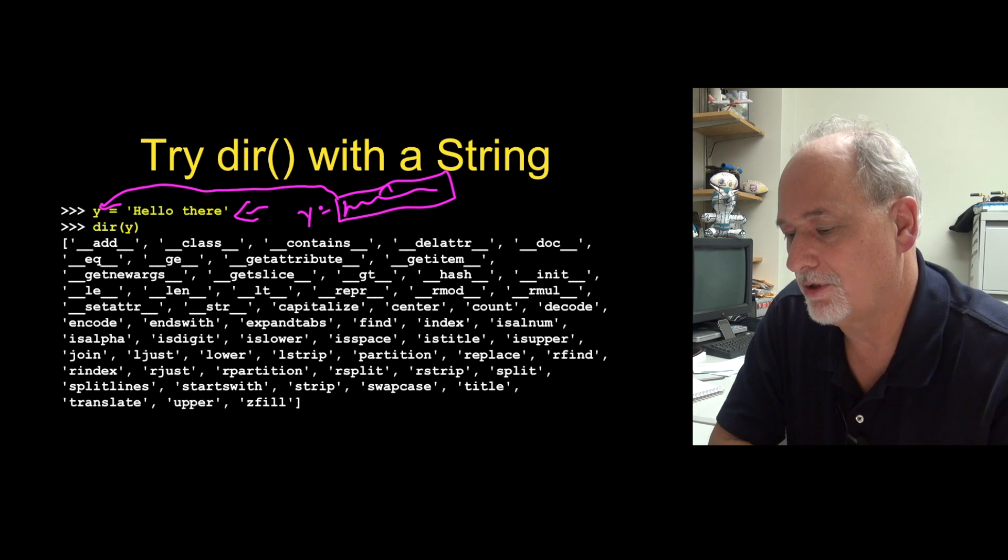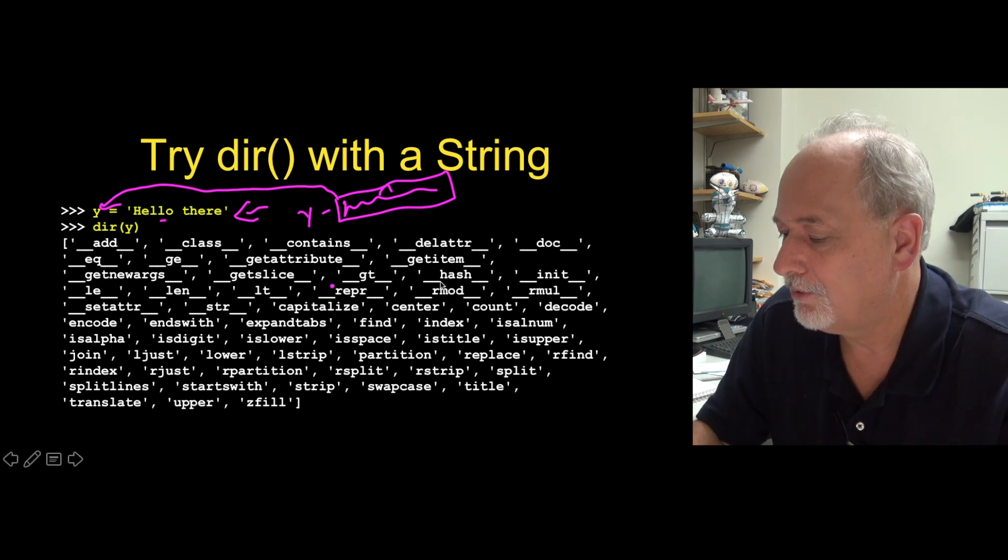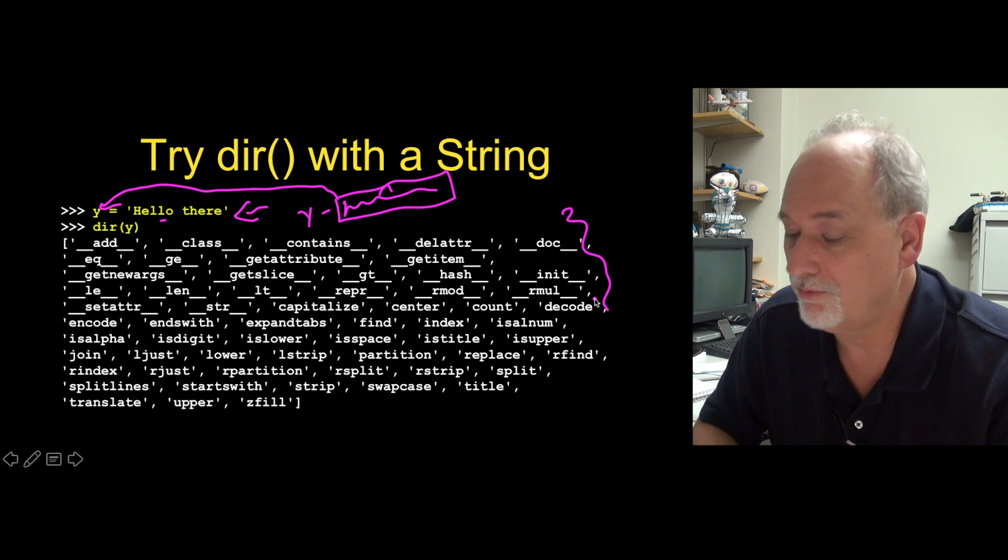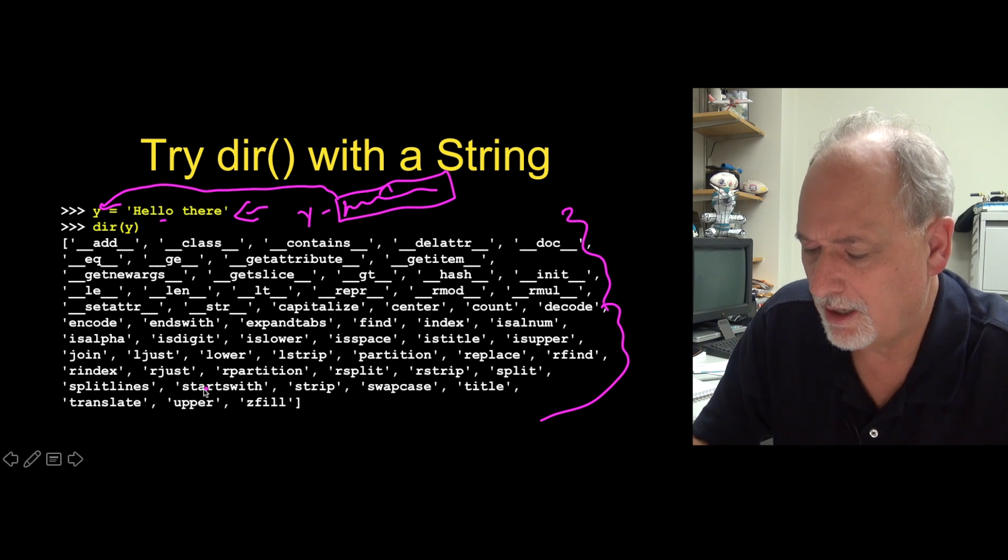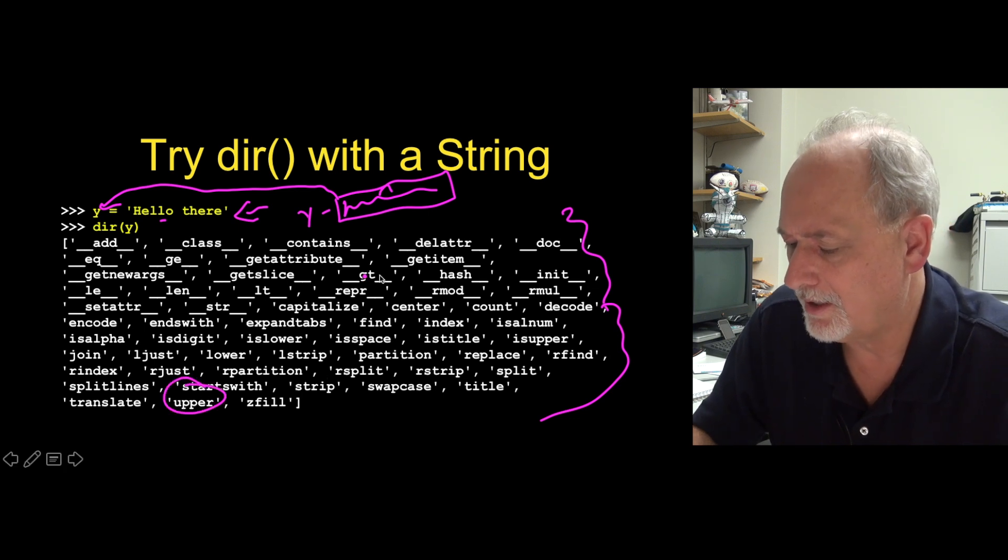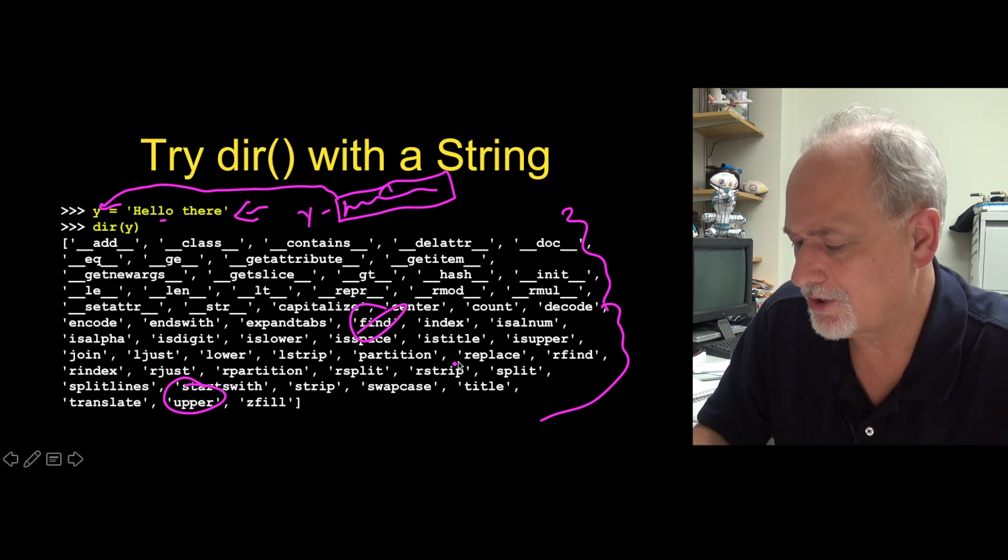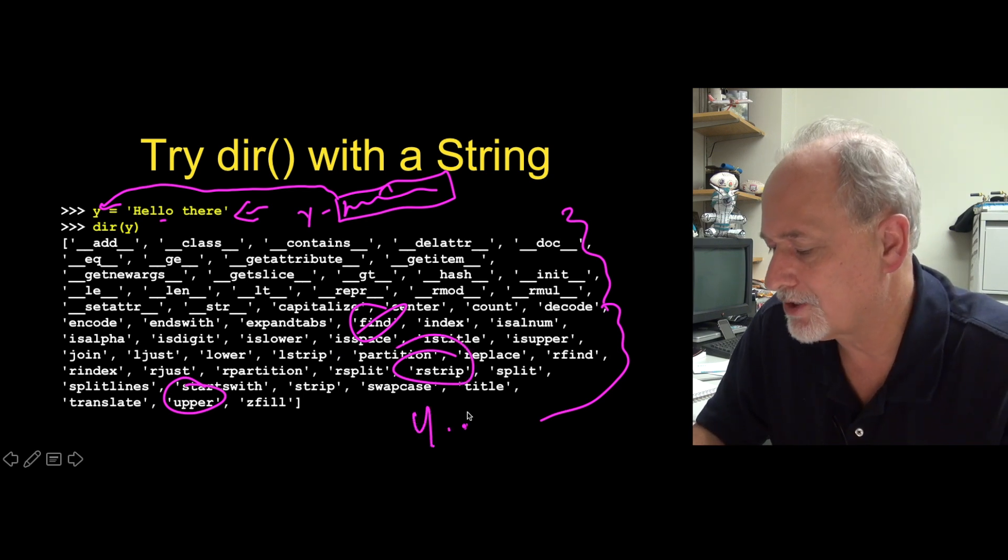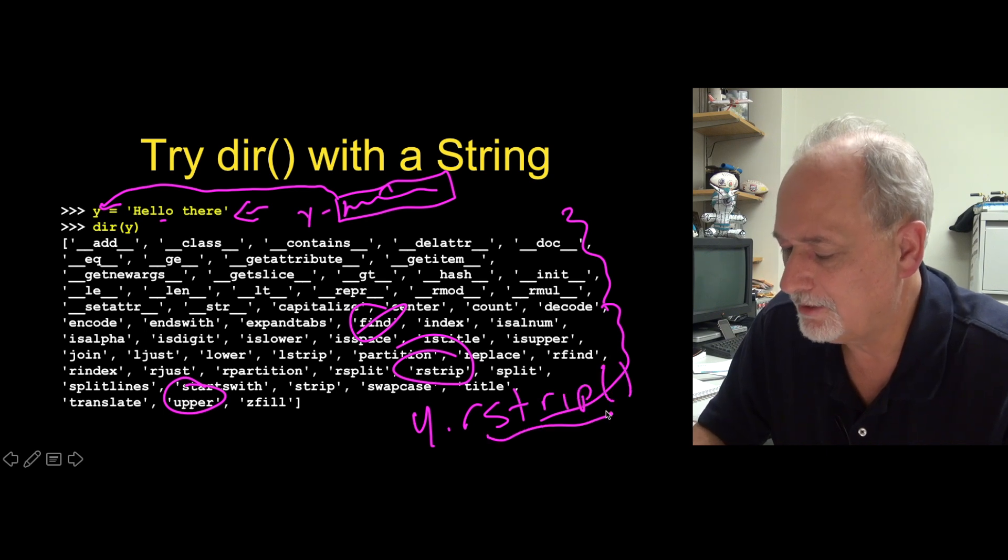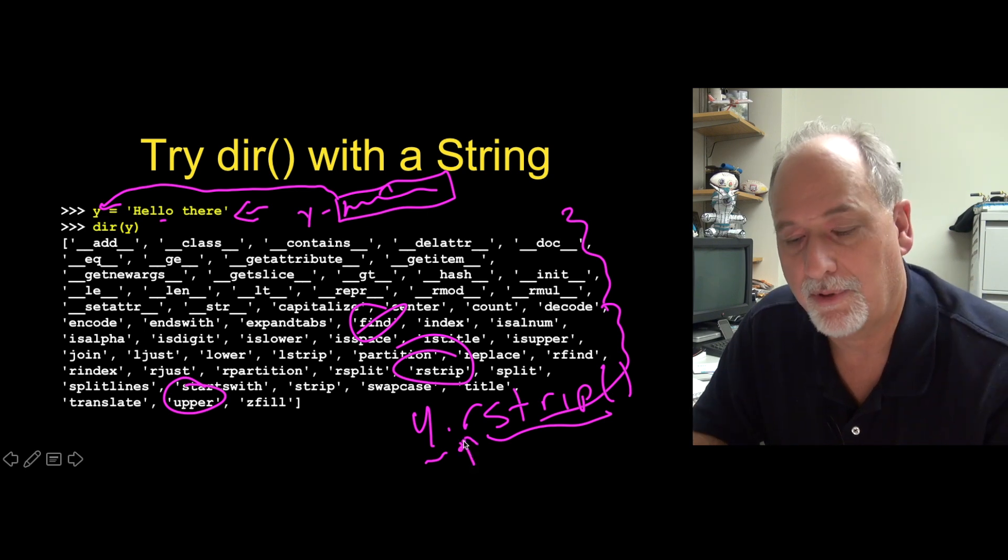If we do a dir of that, we see a whole bunch of internal methods which have double underscores. And then we see all kinds of methods that we've been using. We've been using methods like upper. We've been using methods like find. We've been using methods like rstrip. We've been using these methods. So we go on like y.rstrip, parenthesis. Again, that's a method. That's an object, not a class. It's an object and that is the object lookup operator.